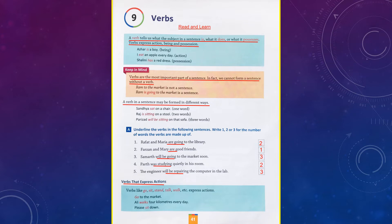Number four: 'Parth was studying quietly in his room.' I have two verbs — was and studying — so I have written two in the nearby box. Sentence number five: 'The engineer will be repairing the computer in the lab.' We have three verbs: will, be, and repairing, so I have written three in the box. This was your Exercise A. Students who had not solved the exercise yet are supposed to solve it right now while the video is on, and those who have done it need to check their work.